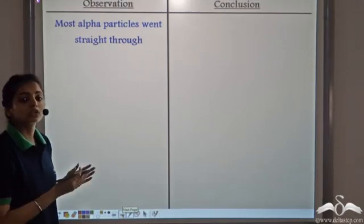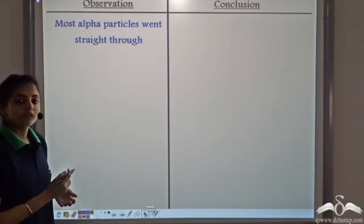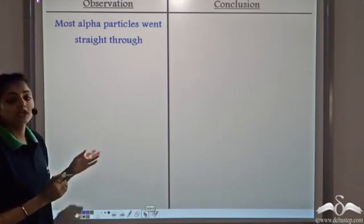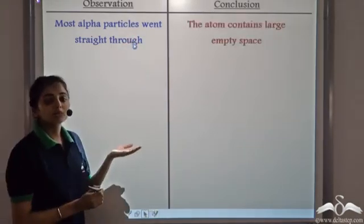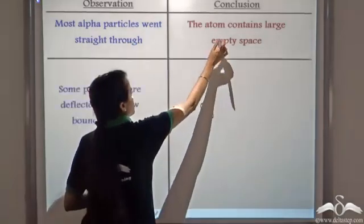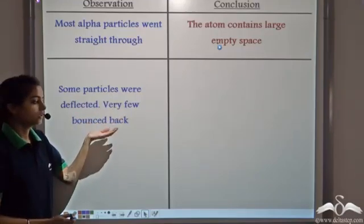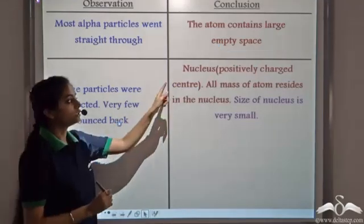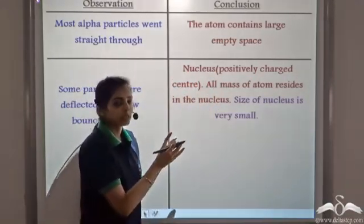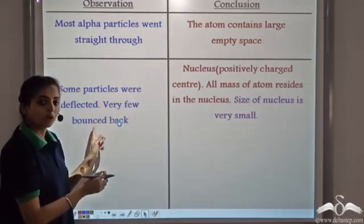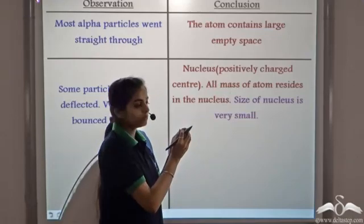From the alpha particle scattering experiment, Rutherford observed that most of the alpha particles went straight through the foil without any deflection, so he concluded that the atom contains a large empty space. Some particles were deflected and very few bounced back, leading him to conclude that the nucleus — the positively charged centre — contains all the mass of the atom. Since only a few particles are deflected and very few bounce back, all the mass is concentrated in this small part called the nucleus.